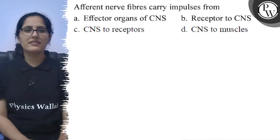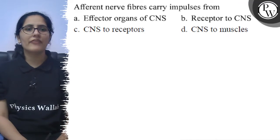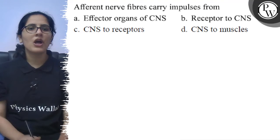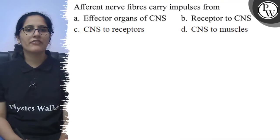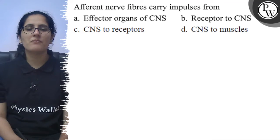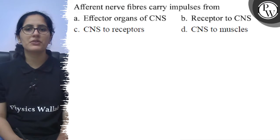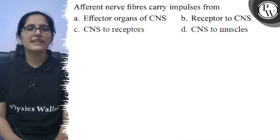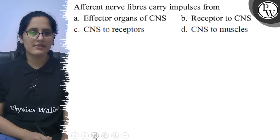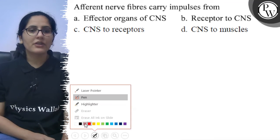Hello, let's see the question. Afferent nerve fibers carry impulses from: option A efferent organs of CNS, option B receptor to CNS, option C CNS to receptors, and option D CNS to muscles. Let's see the question.